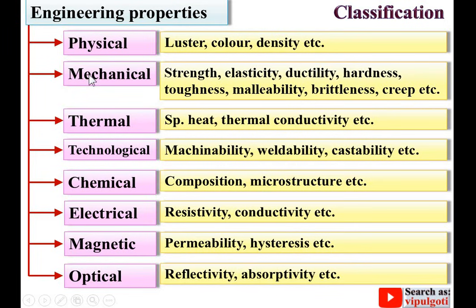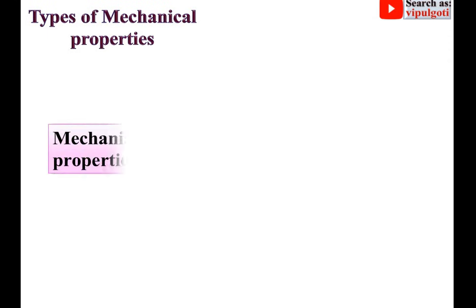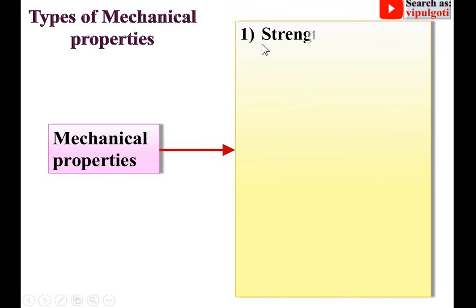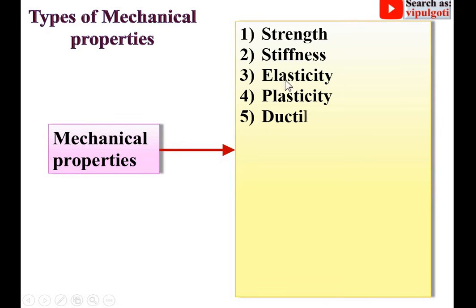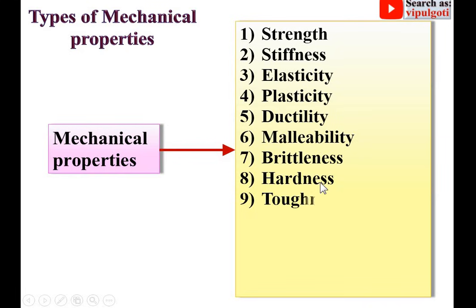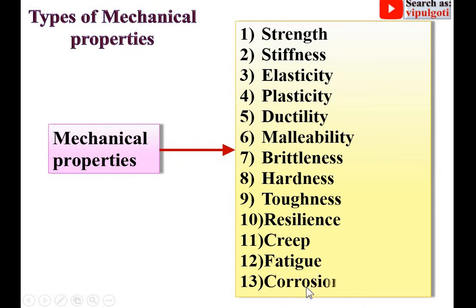In the next slide we are going to discuss about the different mechanical properties and technological properties in detail. The types of mechanical properties include: strength, stiffness, elasticity, plasticity, ductility, malleability, brittleness, hardness, toughness, resilience, creep, fatigue, and corrosion resistance — 13 mechanical properties in total.